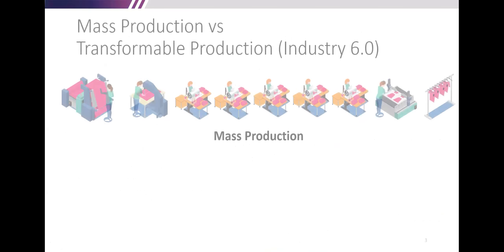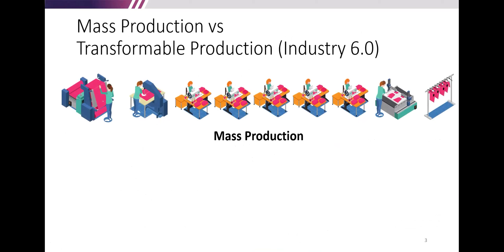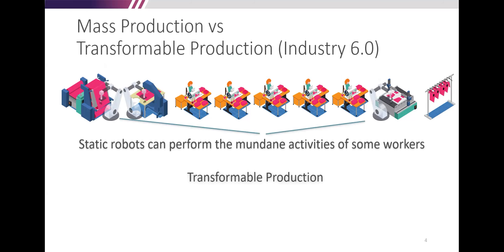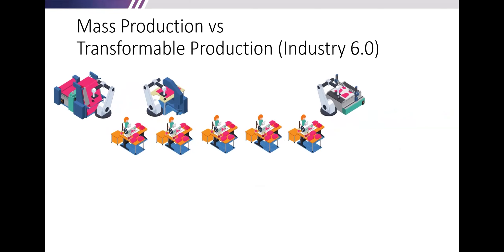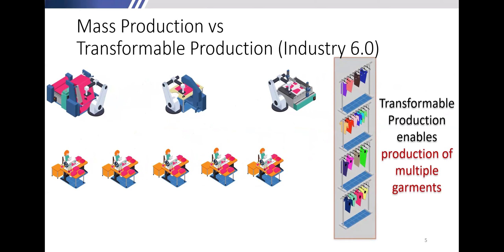In order to address this, I would like to introduce transformer production, which I will explain as Industry 6.0. In mass production, you have one line to produce one type of clothes specifically, requiring a fixed number of workers. Moving to Industry 5.0, you start having some robots working together — static robots and people working in their own separate areas. But to move to Industry 6.0 and achieve transformer production, you need to enable production of multiple types of garments — a personalized industry.